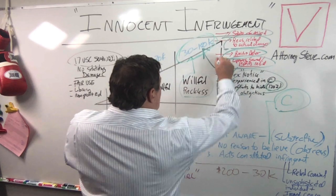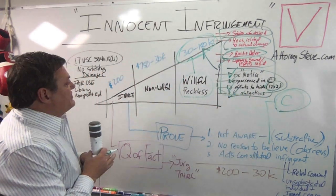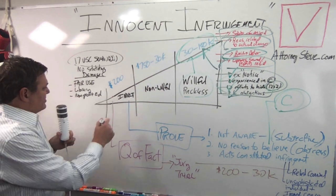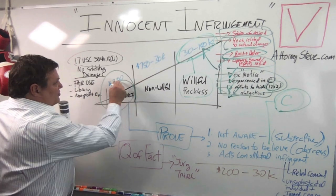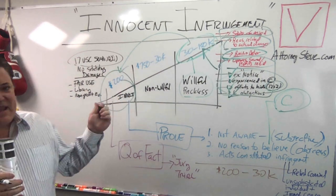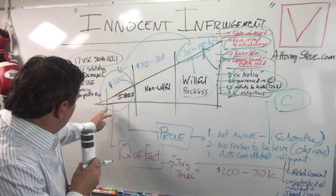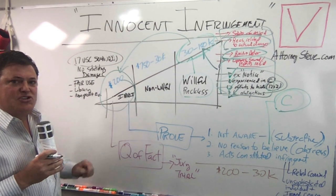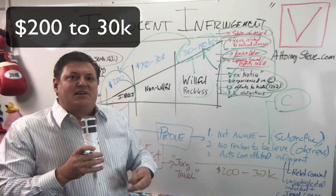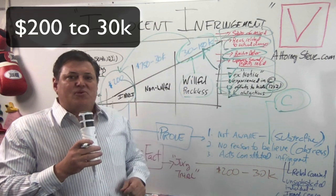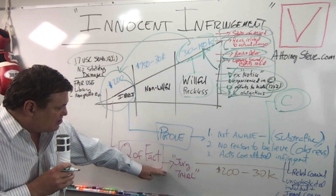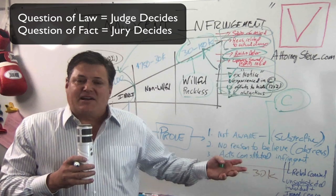Now let's go from willful over here to innocent. There is case law that says innocence can bring damages down to $200 — $200. That's quite a difference from $30,000 to $150,000. So you want to know what does it take to prove that? How do I get there? How do I convince a judge or jury? It's a question of fact.